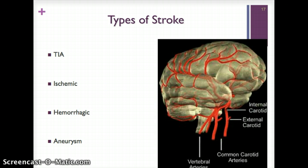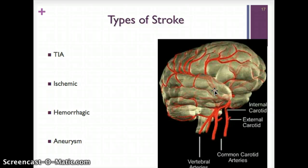There are several different types of stroke. A TIA — transient ischemic attack — is often a precursor to a stroke, sometimes called a mini stroke. An ischemic stroke is a more classic stroke where there is blockage of blood flow to the brain. A hemorrhagic stroke is a bleed in the brain — once blood touches brain cells, there is immediate cell death. An aneurysm is an abnormal ballooning effect of a blood vessel that can burst.